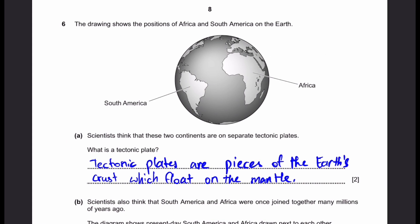The drawing shows the positions of Africa and South America on the Earth. Part A: Scientists think that these two continents are on separate tectonic plates. What is a tectonic plate? First of all, definition questions are not easy to come on the Cambridge exam, but they do come. In this case, this is a simple definition. Tectonic plates are pieces of the Earth's crust which float on the mantle. That's it, two marks.